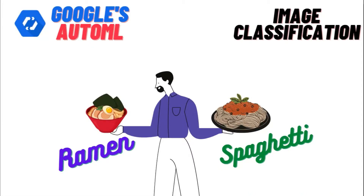Hello everyone. In this video I'm going to show you how to create an image classification model in Google Cloud Platform using AutoML. We're going to take two images and train a model so the machine can understand and predict whether an image is ramen or spaghetti — my two favorite meals. This is literally no-code, so you don't have to worry about training a model. All you're going to do is sit and click.